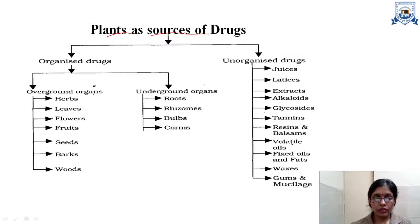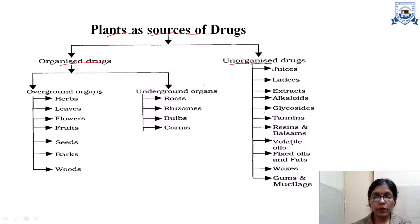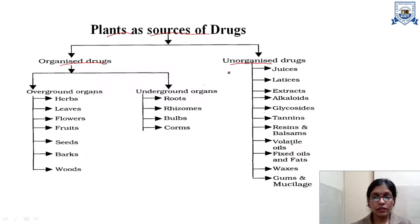The drugs or the crude drugs that are obtained from plants can be of two types: organized drugs or unorganized drugs. Organized drugs means the plant part which is being used as such for medicinal purposes. These organized drugs contain some cellular tissue arrangement, while the unorganized drugs are the exudations obtained from the plant — they are plant products and do not contain any cellular arrangement or tissues.